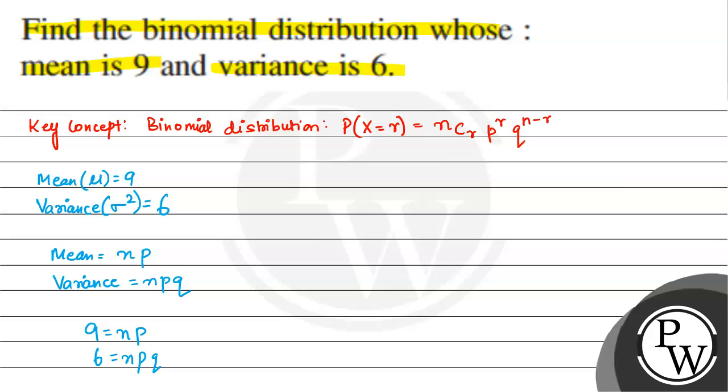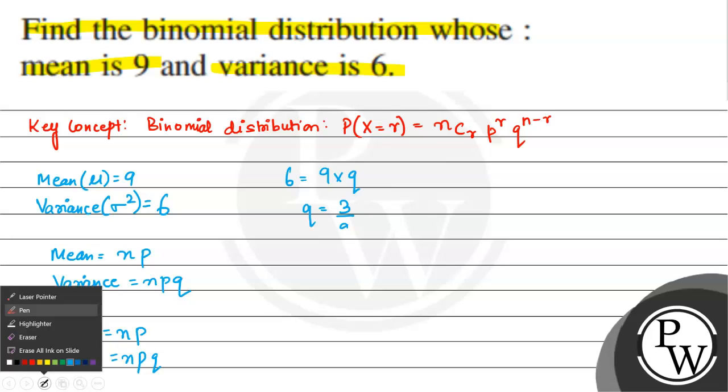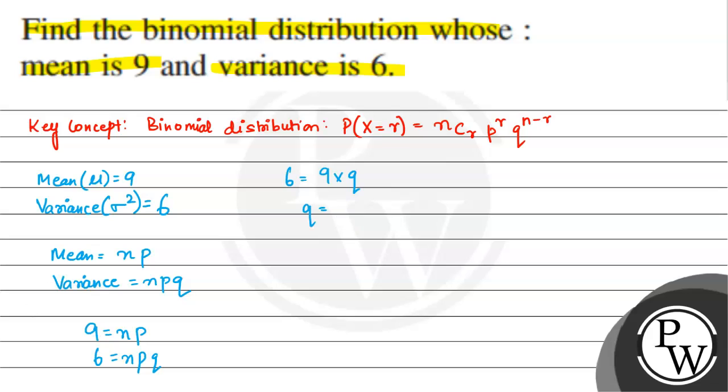q ki value nikal lete hai? We have 6 is equal to np is 9 multiplied by q. So q bachcho yaha se a gaya 6 by 9, which is equal to 2 by 3. So now we know, therefore,